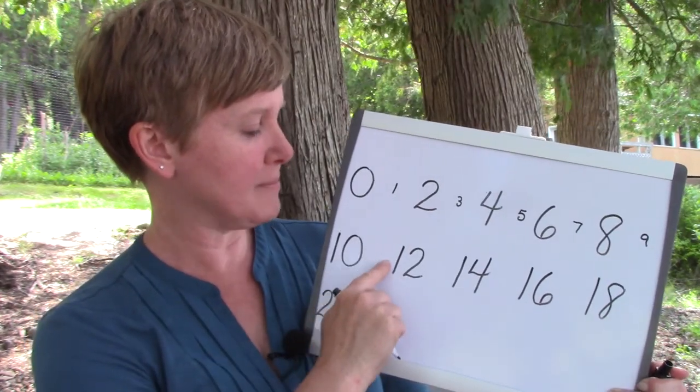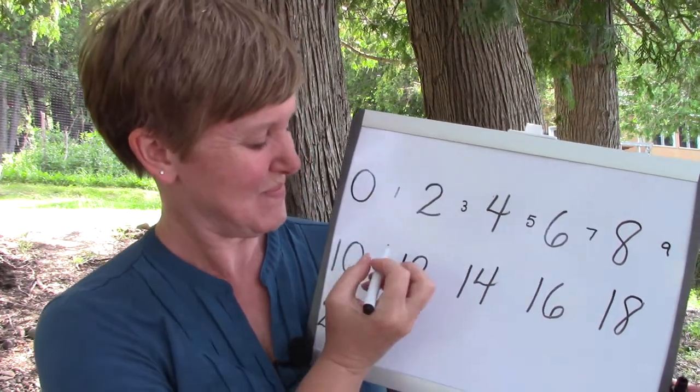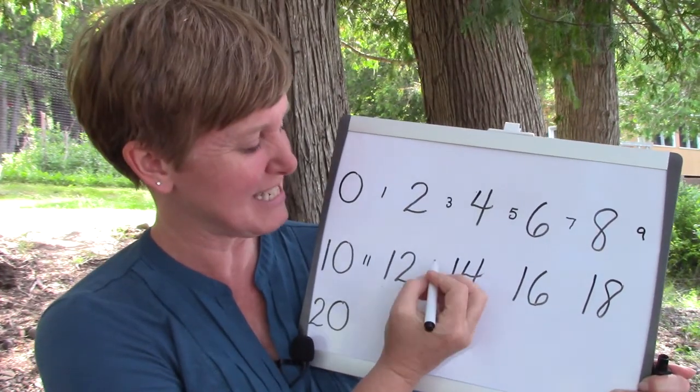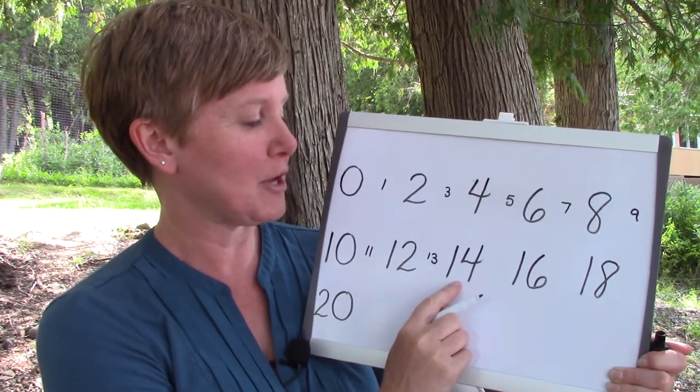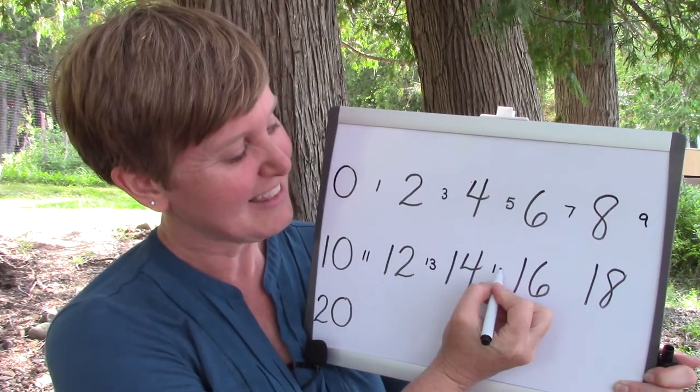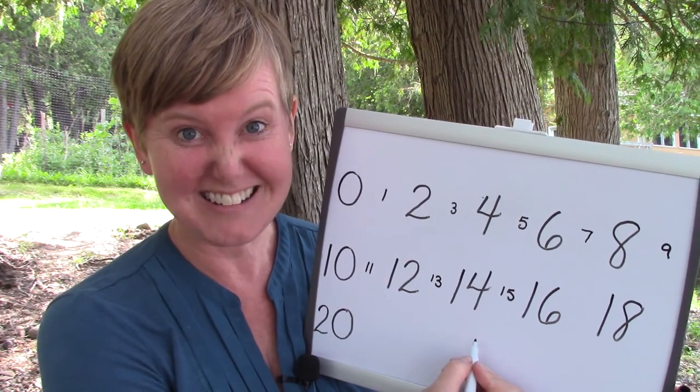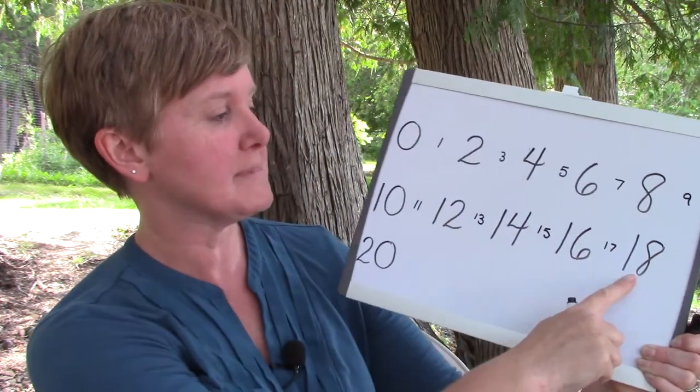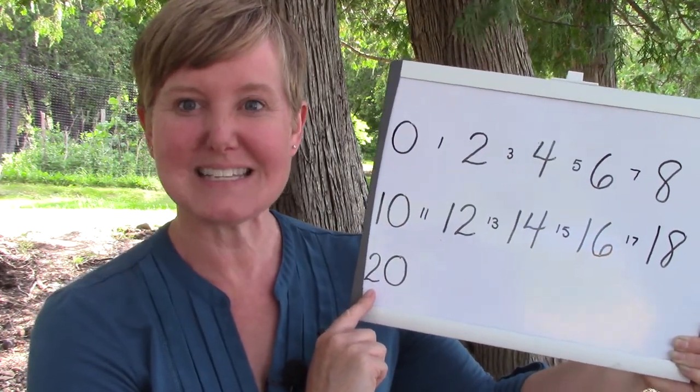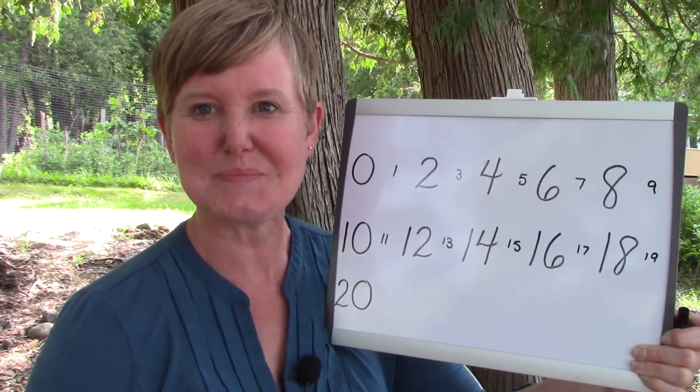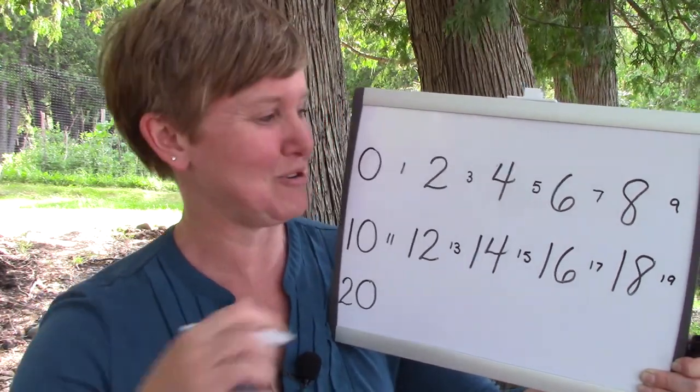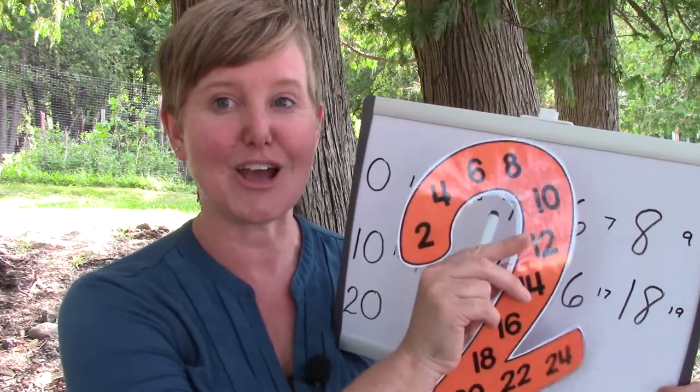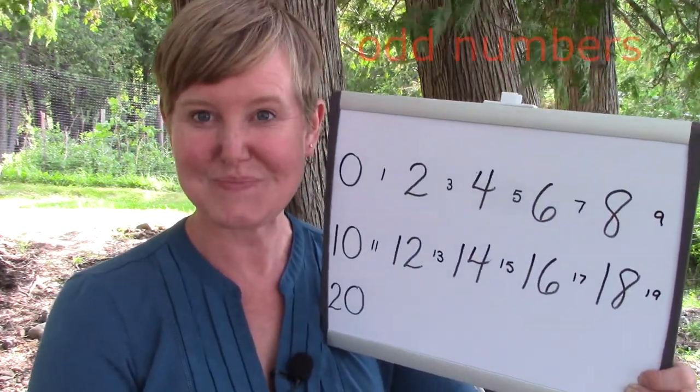Then we have 10. What number comes between 10 and 12? It's 11. I'm going to draw a little 11. What number comes after 12 but before 14? It's 13 and I'm going to make it teeny tiny. What number comes after 14 but before 16? Did you say 15? You would be right. And then after 16 but before 18 it is the number 17. What comes after 18 but before 20? It's 19 and I'm going to draw a teeny tiny 19 on the board.